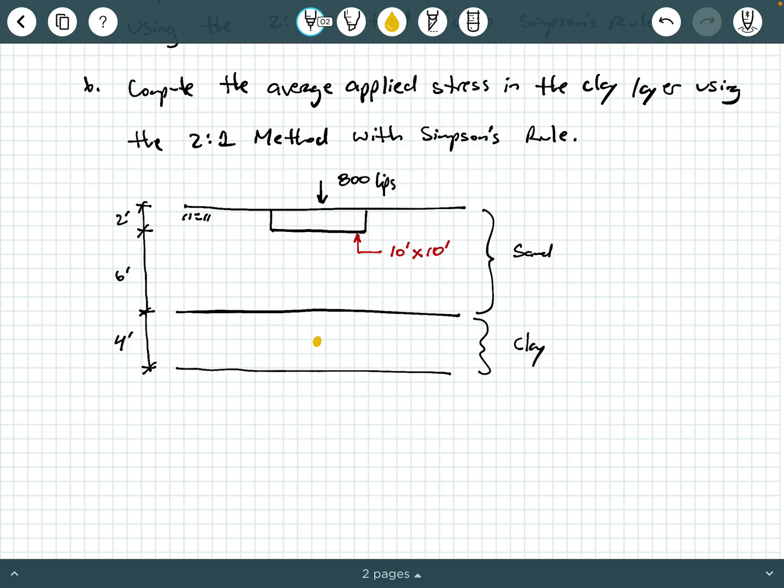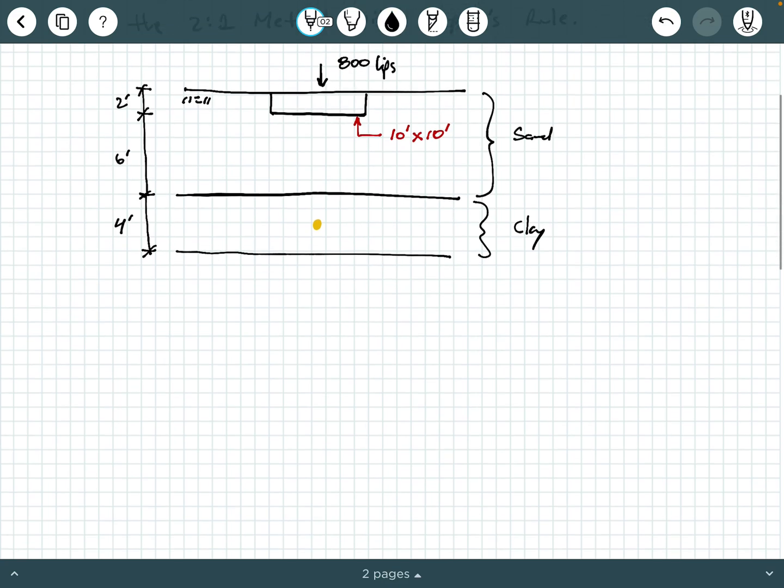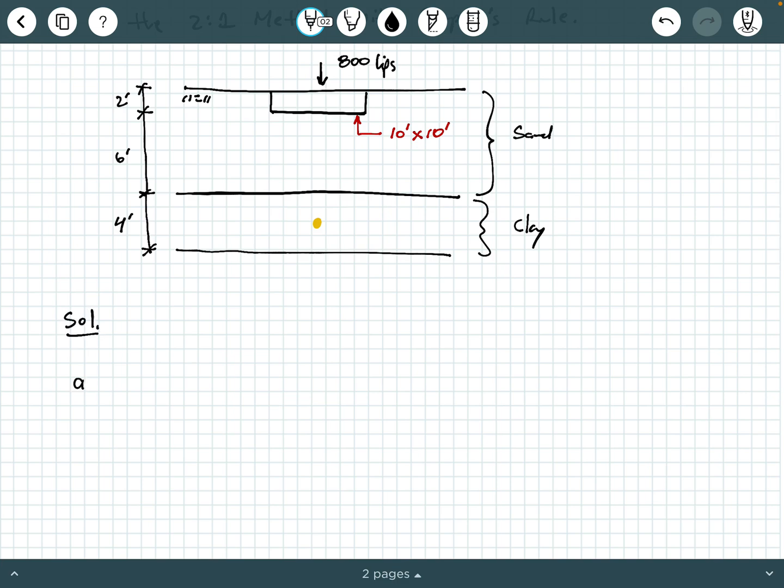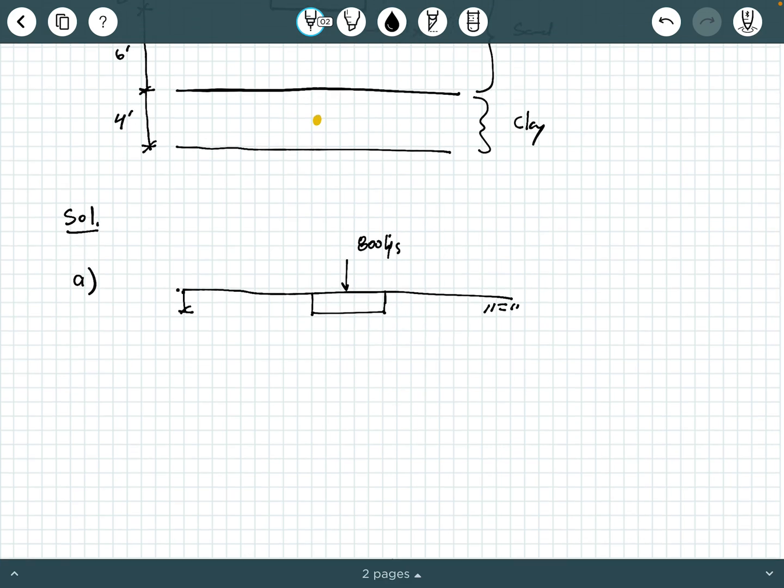Let's go ahead and start our solution. For our solution for Part A, I'm going to just go ahead and redraw this figure. So we've got our foundation here, 800 kips. And the foundation is 2 feet thick. And then below that we have 6 feet of sand, and then below that we've got 4 feet of clay that we're interested in. Part A says just use the 2-to-1 method without using Simpson's rule. So we're going to project these lines down to the midpoint of the clay layer, 2 feet below that sand-clay interface.